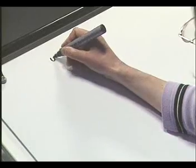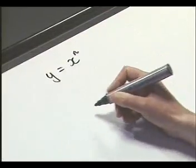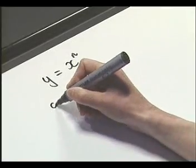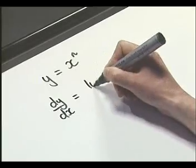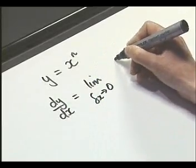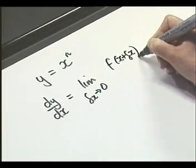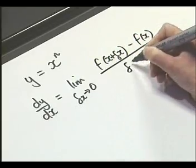So we'll be looking at things like x squared, x to the power 7, even x to the power 1. So we have y equals x to the power n. Our definition of our derivative function is dy by dx equals the limit as delta x approaches zero of f of x plus delta x minus our function of x divided by delta x.